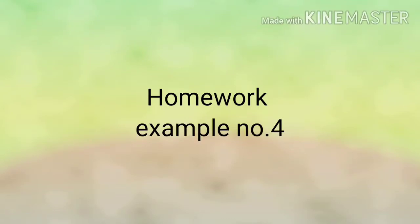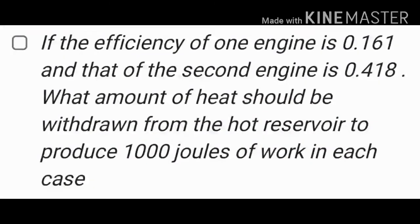Example number 4 is given for your homework. If the efficiency of one engine is 0.161 and that of the second engine is 0.418, what amount of heat should be withdrawn from the hot reservoir to produce 1000 joules of work in each case? Please answer this example in the comment box like the previous video.